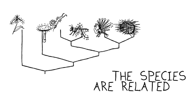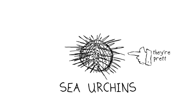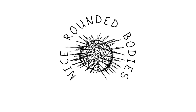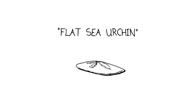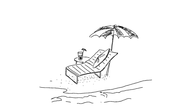Think about sea urchins, for example. They're pretty neat animals. They have long spines and nice rounded bodies supporting those spines. Did you know that sand dollars are basically flat sea urchins that have adapted to life on the beach, which is pretty nice work if you can get it?